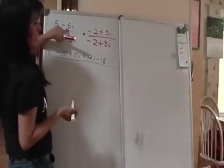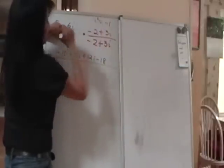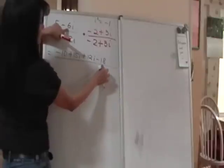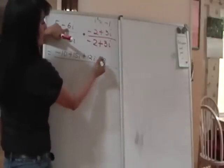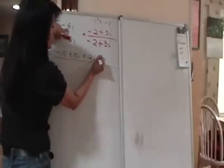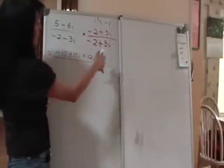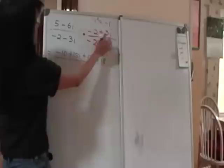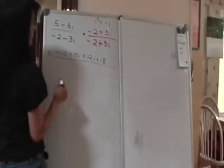Now, i squared is negative 1. So remember, i squared is negative 1. So when I have a negative 18i squared, that negative 18 will be multiplied by negative 1. So I can change this negative to positive. You can do that. You don't have to show me every single step. So i squared is negative 1, that's why this became a positive 18.